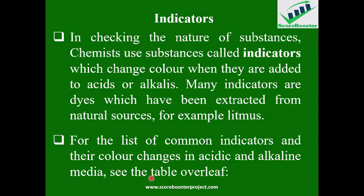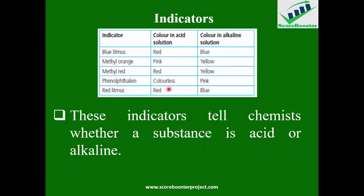Another concept is indicators. We said we can distinguish between acids and bases by their feel or solution, but that is not scientific and is very dangerous, because you don't want to check the nature of substances that way. So we use indicators — substances that change color when in contact with an acid or a base. The color change tells us whether it is an acid or a base. Looking at a table of indicators: blue litmus in acid turns red; red litmus in alkali turns blue. Methyl orange is red in acid but yellow in base. Methyl red is pink in acid and yellow in base. Phenolphthalein is colorless in acid and pink in base.